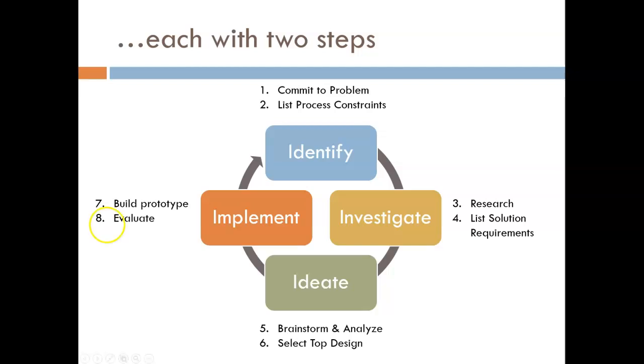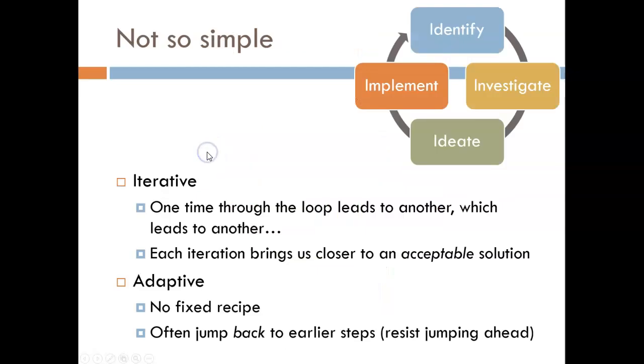Although this design process circle looks fairly simple, it is never as tidy as we imagine it to be. The most important part of the whole diagram is this little arrow looping back around. After evaluating our prototype, we identify more problems to address. This kickstarts the next iteration of the design process, which will lead to another, and another.